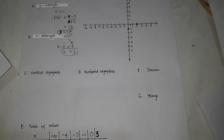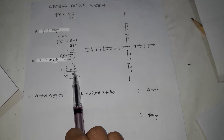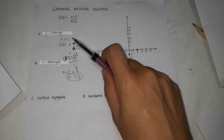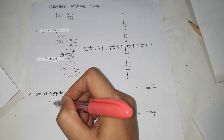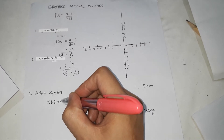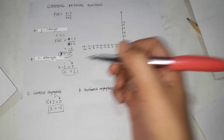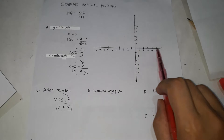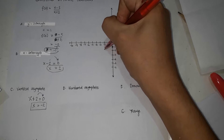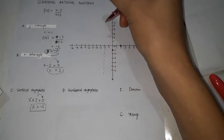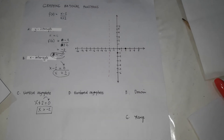To get the vertical asymptote, take the denominator and equate it to zero. So x plus 2 equals 0, and transposing gives x equals negative 2. That is our vertical asymptote. Find negative 2 on the x-axis and draw a vertical line through it.